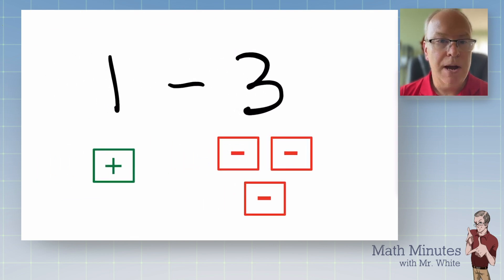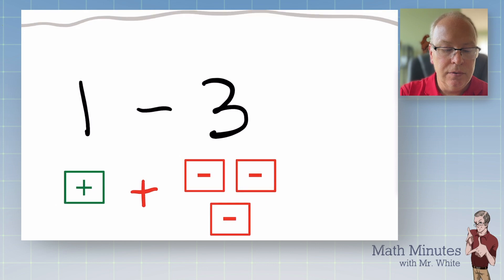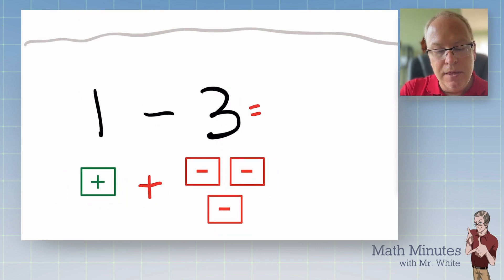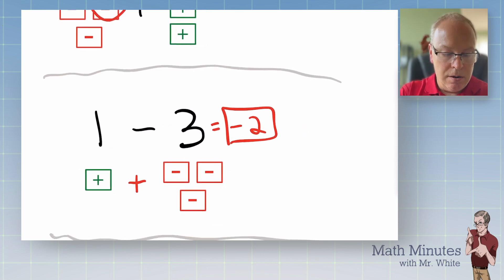All right, moving on. What about this problem? One minus three. Remember, there's no such thing as subtraction. So I purposely left this off. This is an addition problem where we're taking positive one and we're combining it with negative three. So who wins? Who's got more on their team? The negatives by two. Easy peasy, right?